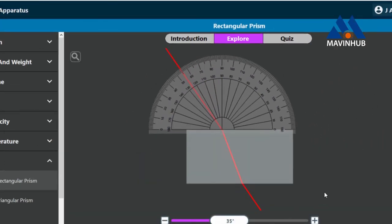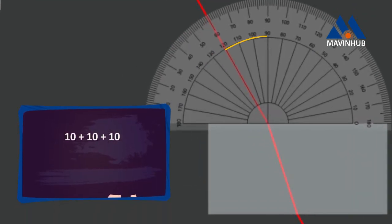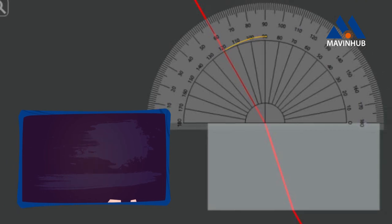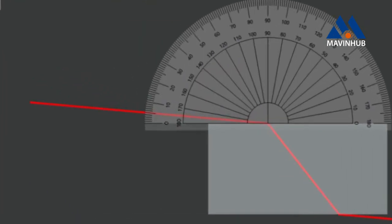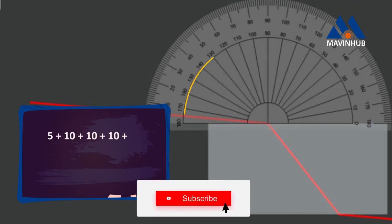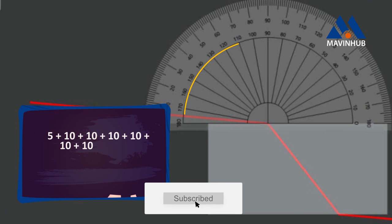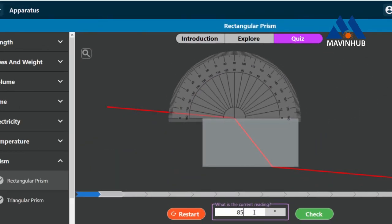Let's take a quiz. The angle of incidence to the normal is 10 plus 10 plus 10, which equals 30 degrees. Therefore, the angle is 30 degrees. The angle of incidence to the normal is 5 plus 10 plus 10 plus 10 plus 10 plus 10 plus 10, which equals 85 degrees. Therefore, the angle is 85 degrees. You can guess what this angle is — it is 30 degrees.